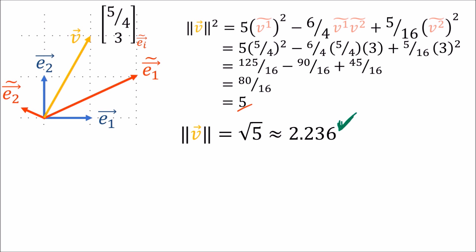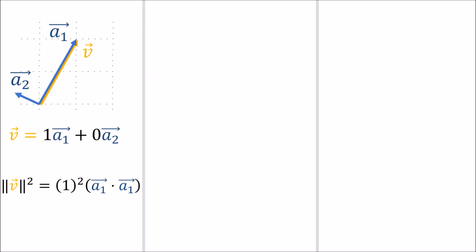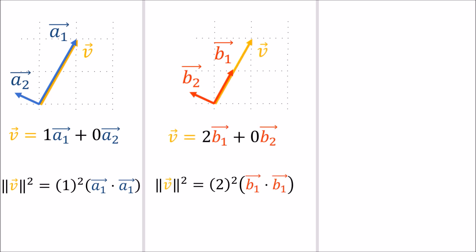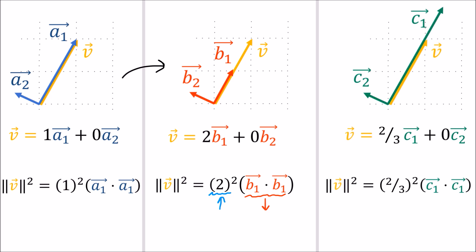This formula, where we compute v dot v, gives us the right answer for the squared vector length in all coordinate systems. The reason is that when a vector's components get bigger, the basis vectors get smaller. Going from a to b, the components grow from 1 to 2, but b1 dot b1 will shrink compared to a1 dot a1. The growing components and the shrinking dot product of the basis vectors balance out, so the length stays the same — and the same applies in the other direction.